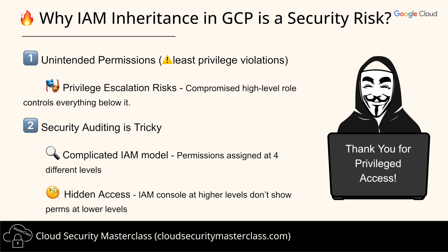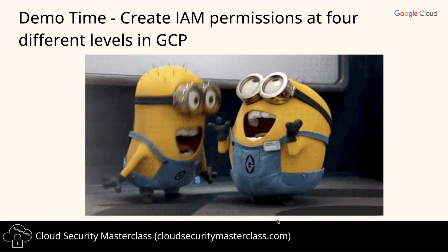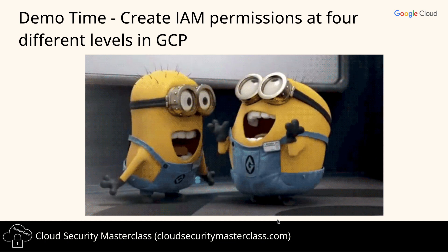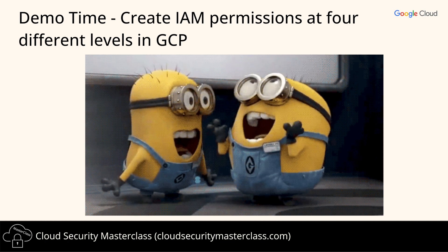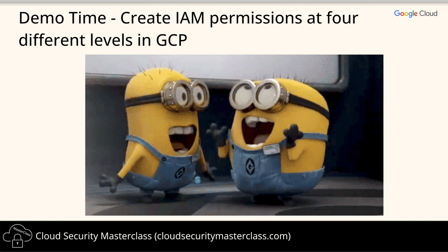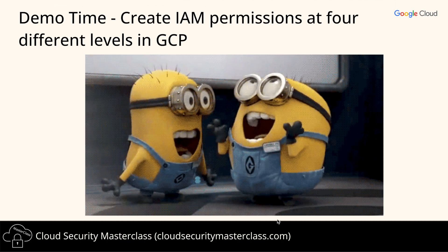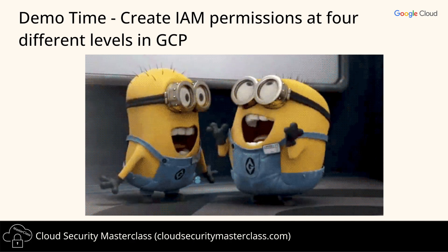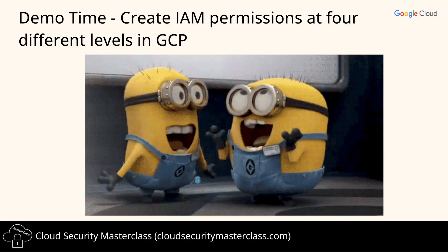And this is exactly why IAM inheritance can be a hidden security risk. Now, enough theory. Now that we understand how IAM inheritance works and why it can be risky, let's test it in real time with a live demo. I'm going to set up different IAM roles at the org, folder, project, and bucket levels, and we'll see exactly how permissions flow down and accumulate, even when we don't explicitly grant access to a resource.